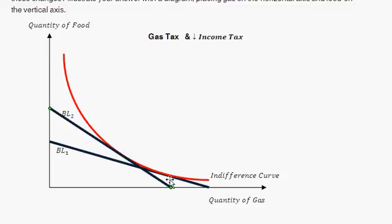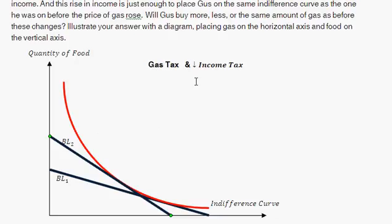So where before Gus was at some point in this area, there was a lot of gas and a smaller quantity of food. Now Gus is at this point over here where his food consumption has gone up and his gas consumption has gone down. So we could definitely say, will Gus buy more, less, or the same amount of gas?